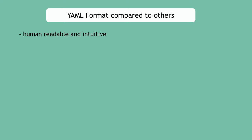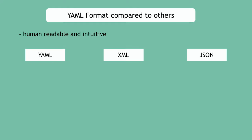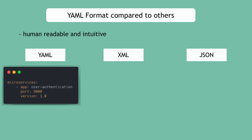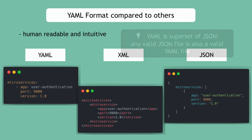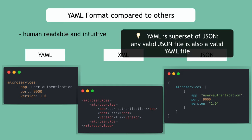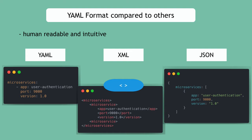One of the main reasons YAML's popularity has increased so much over the past years is that it's super human-readable and intuitive, which makes it a great fit for writing configuration files for all those recent DevOps tools like Docker, Kubernetes, etc. To show you an example and a comparison between YAML, XML, and JSON formats, let's consider this example. This is how a YAML file would look like — it's very straightforward and pretty clean. This is the same data in XML format, and then you have the JSON format.